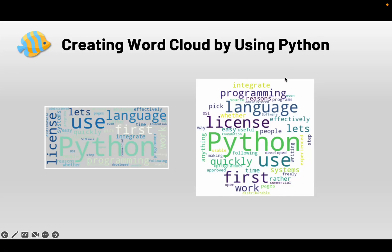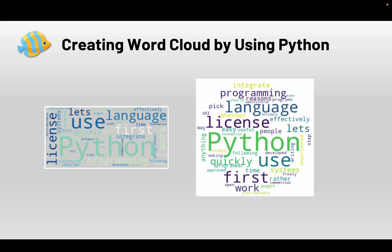Hello everyone, welcome to Python visualization class. In this tutorial, we are going to learn how to use Python to create a word cloud. The word cloud is a visual representation of a certain text or aggregation of words. The size of each word corresponds to its frequency in the text. The goal of the word cloud is to emphasize certain information so that you can better communicate with your audience. Let's go to Google Colab and see how we use Python to create those two word clouds.